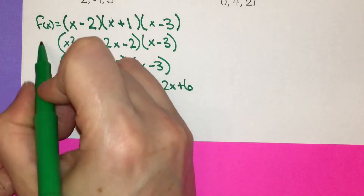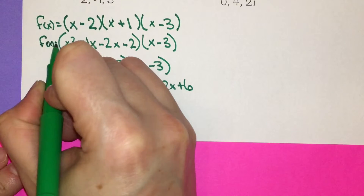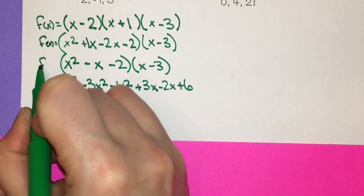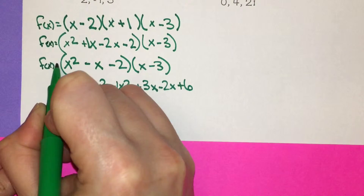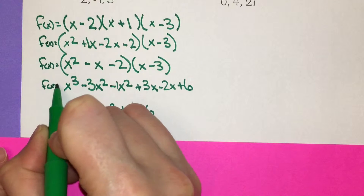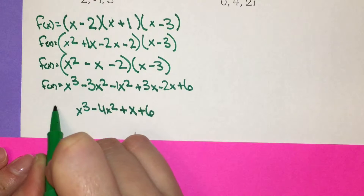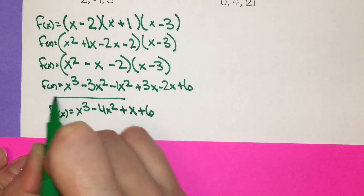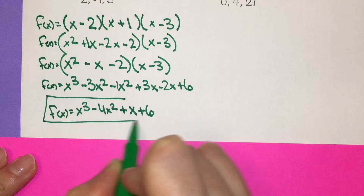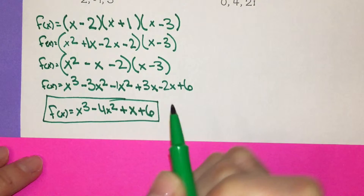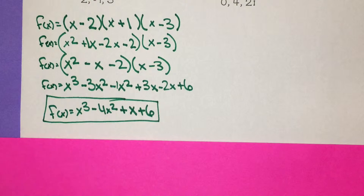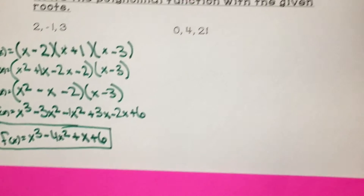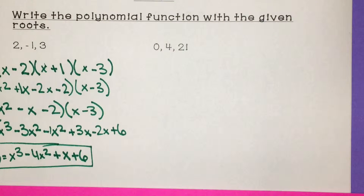So f of x equals x cubed minus 4x squared plus x plus 6. That's our polynomial function — basically just multiply all those factors together.